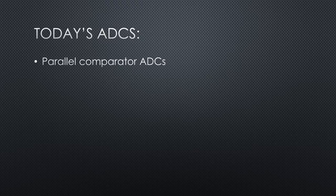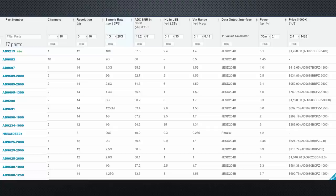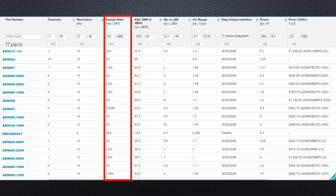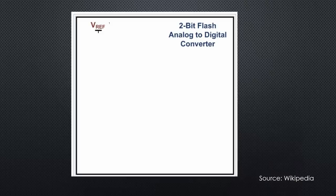Parallel comparator ADCs and successive approximation ADCs. Let's start with the parallel comparator ADCs. They are fast, expensive, and not too accurate. Fast means they can convert signals up to GHz, which is crazy if you ask me. Their main turf is software-defined radios and other extremely fast processes. If you are interested in what software-defined radio is, you can watch video number 286.